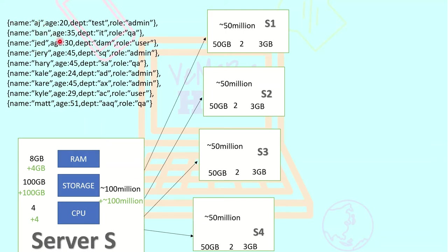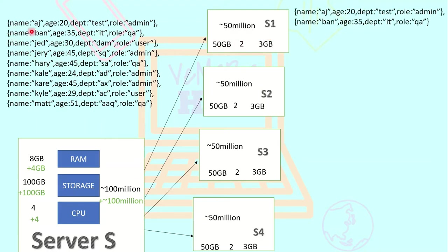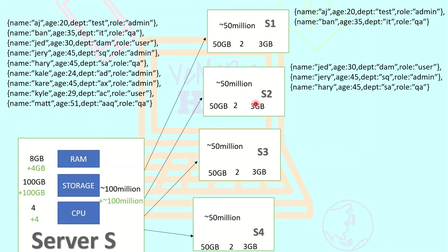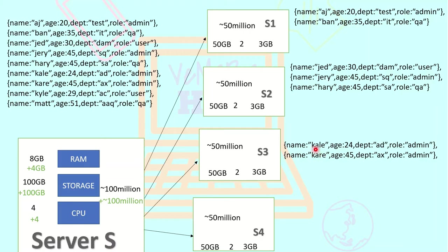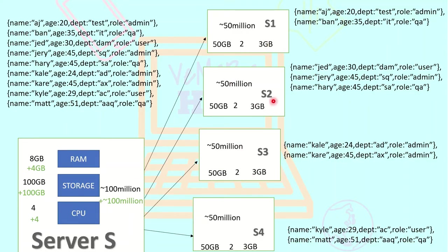The range-based partition can look something like this: shard server S1 might take documents with the name field starting from A to B, shard server S2 might take documents from J to H, S3 might take the K-A range, and S4 might take from KY to M. When a new document is added, according to the shard key and the range it belongs to, it will move to that particular shard. Each set of these data are known as chunks, and there is a load balancer which moves these chunks from one shard to another as per the load.